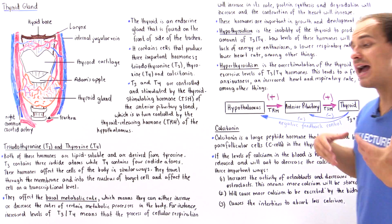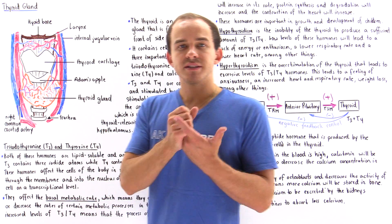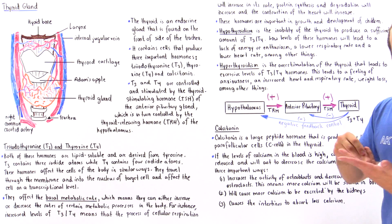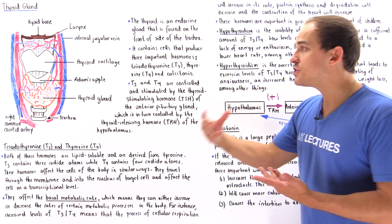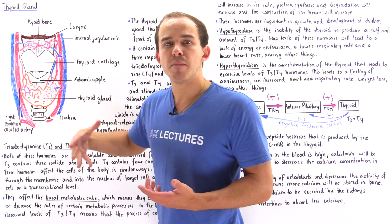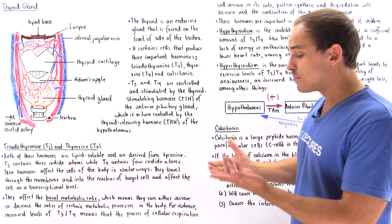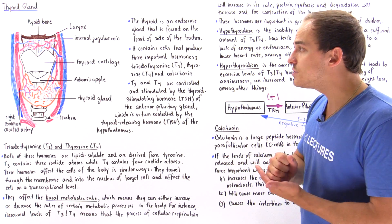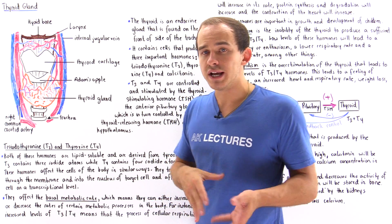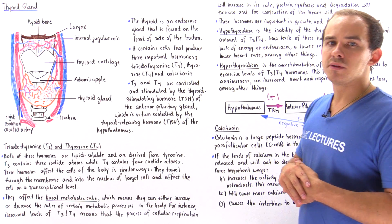In summary, the thyroid gland is an endocrine gland that releases and produces three important types of hormones. T3 and T4 are responsible for controlling the basal metabolic rate — increasing or decreasing that rate. Calcitonin is responsible for controlling the calcium concentration inside our blood.